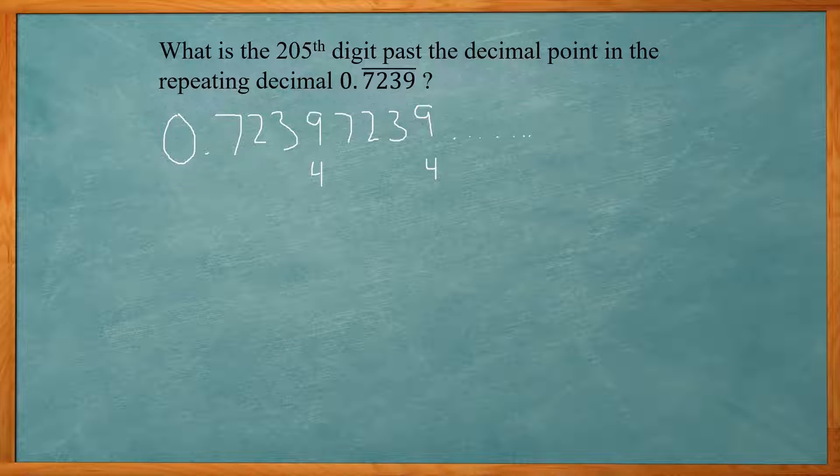Now we don't want to go through and write all 205 in order to solve this problem, so what we can do is take the 205. We have four digits that are repeating, so we can divide it by four.